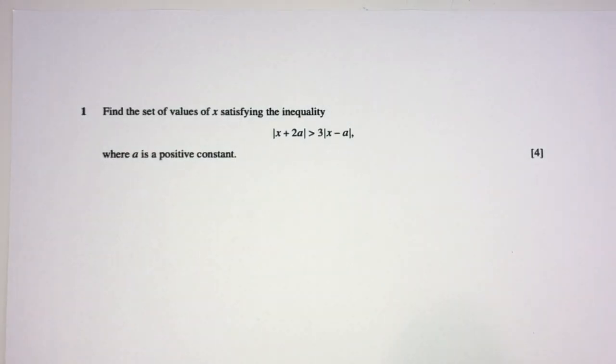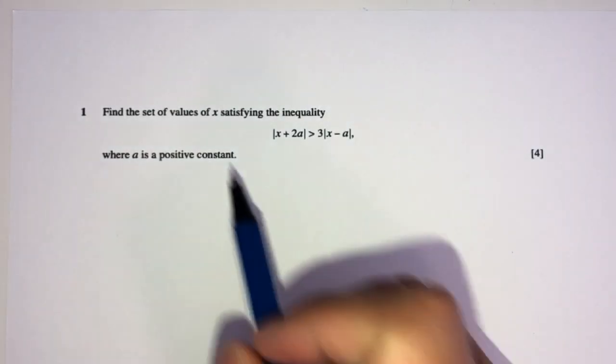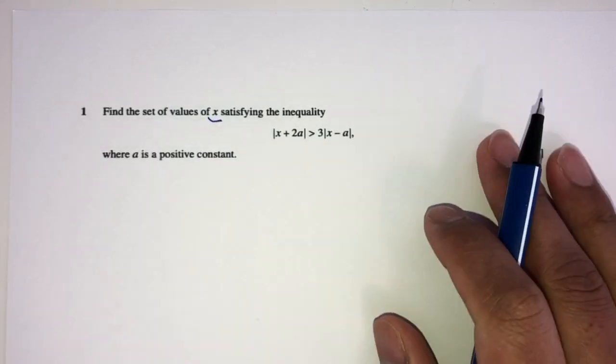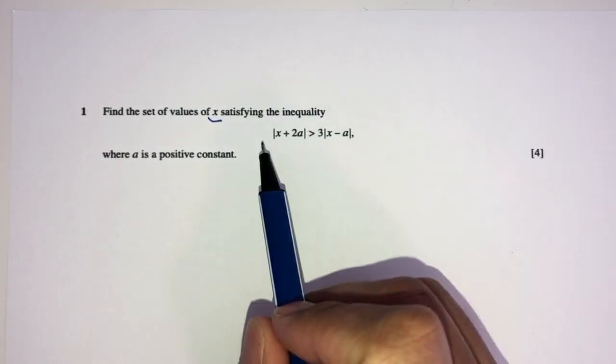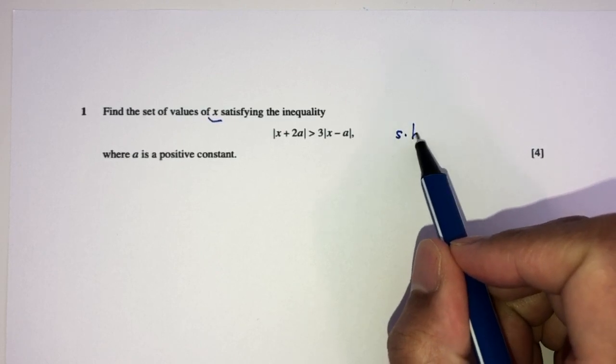So here we have question number one. We have to find the set of values for x satisfying this inequality. Now, as you can see, we have x on both sides and modulus on both sides. So what do we do? We can square both sides to start.